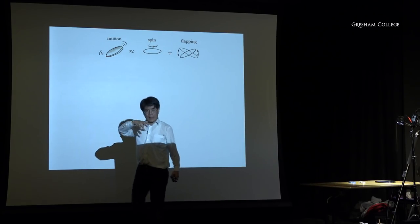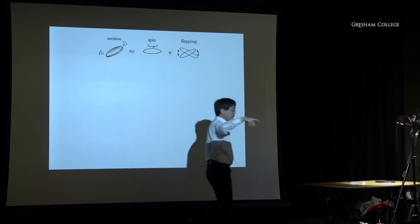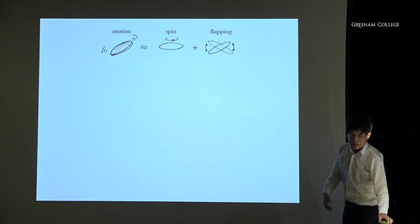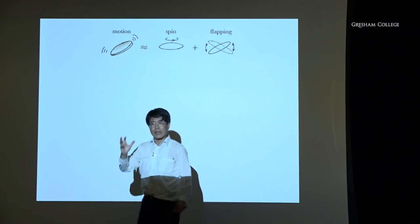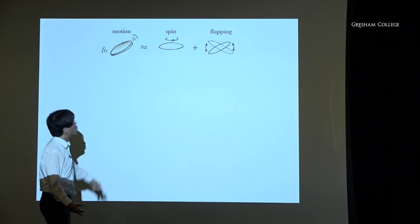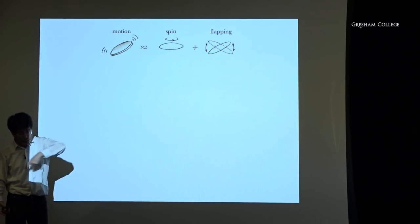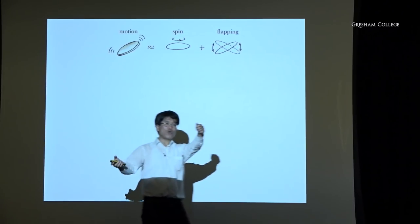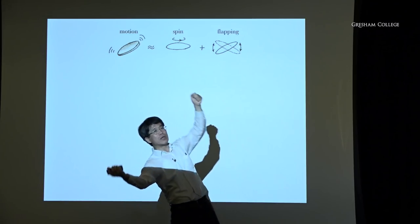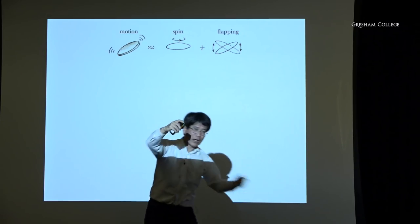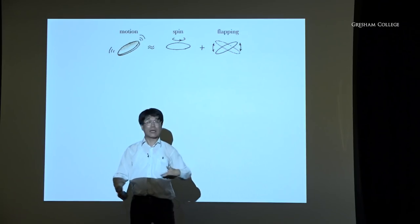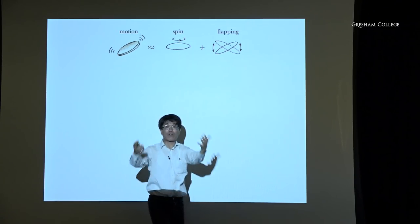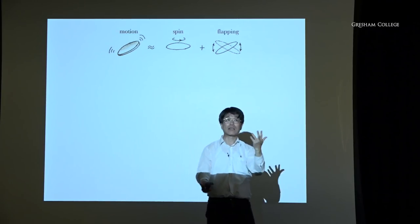What was speeding up was not the spin — the spin was very steady. You can imagine the motion of the coin as a nonlinear superposition of two things: spinning and flapping. As you spin and flap, the point of contact moves around a large circle on the ground. The spin is steady, but it's the flapping that goes faster and faster.